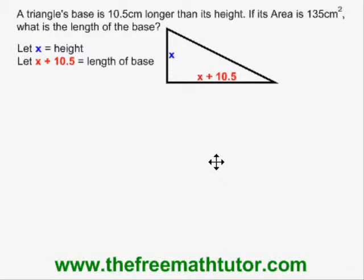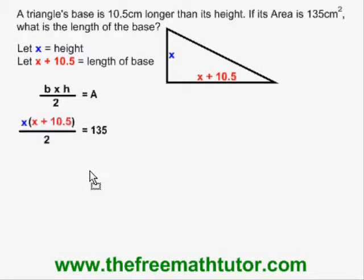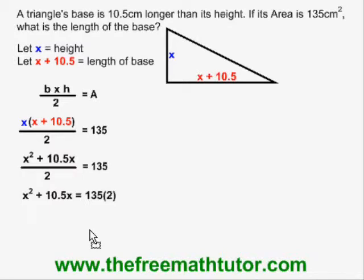The next thing I need is the area of a triangle formula, which looks like this. Then I fill it in with the variables I've defined for the height and the base. Simplifying, I multiply across the bracket, then move the 2 to the other side of the equal sign, and I'm able to simplify my equation into a quadratic equation.